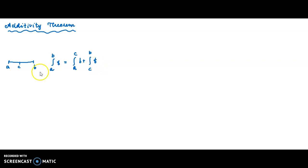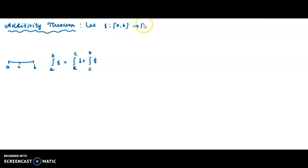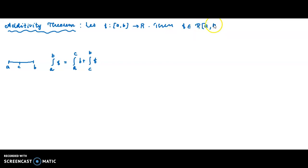Additivity Theorem. The theorem states: let f be a function from the closed interval [a, b] to ℝ. f is a real-valued function defined over the closed interval. Then f is Riemann integrable — f ∈ R[a, b].